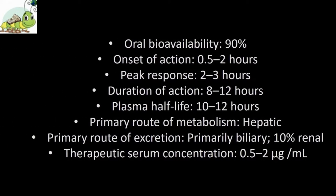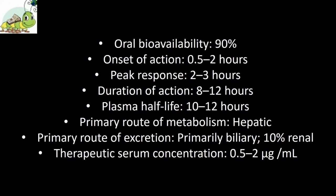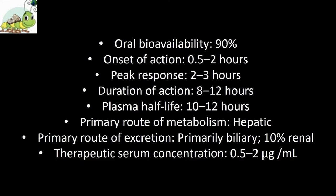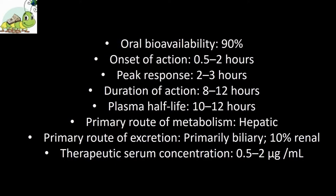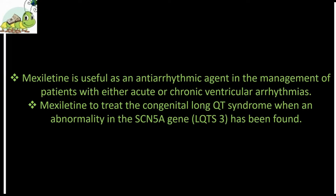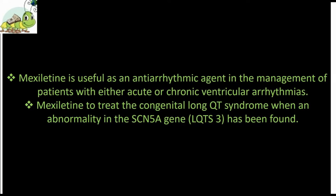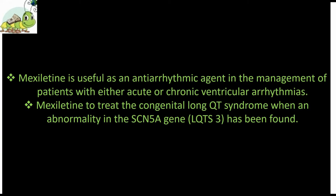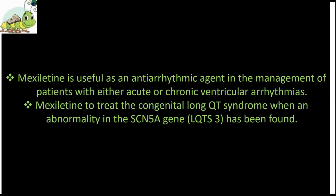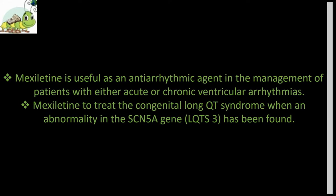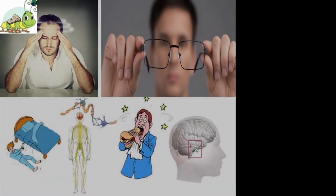Pharmacokinetics: The pharmacokinetic characteristics of mexiletine — oral bioavailability: 90%; onset of action: 0.5 to 2 hours; peak response: 2 to 3 hours; duration of action: 8 to 12 hours; plasma half-life: 10 to 12 hours; primary route of metabolism: hepatic; primary route of excretion: primary biliary, 10% renal; therapeutic serum concentration: 0.5 to 2 mcg per ml. Clinical uses: Mexiletine is useful as an antiarrhythmic agent in the management of patients with either acute or chronic ventricular arrhythmias. There is also interest in using mexiletine to treat the congenital long QT syndrome when an abnormality in the SCN5A gene (LQT3) has been found.